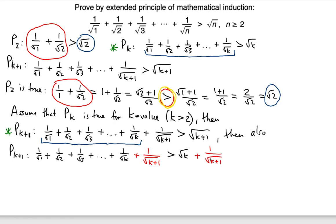Now we need to verify that √k + 1/√(k+1) > √(k+1). If we can show this, then since the left side of P(k+1) is greater than √k + 1/√(k+1), and that is greater than √(k+1), the P(k+1) statement holds.